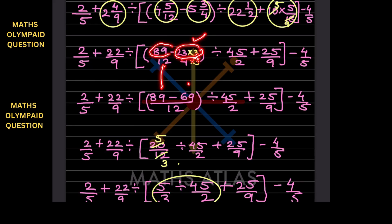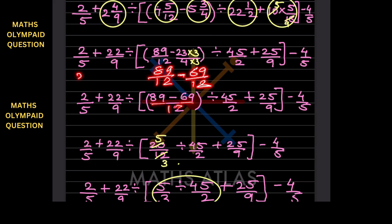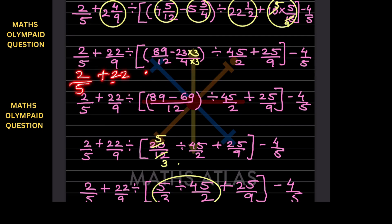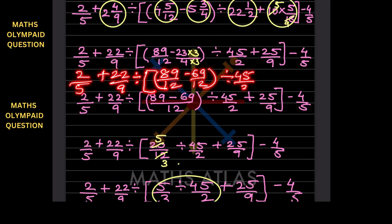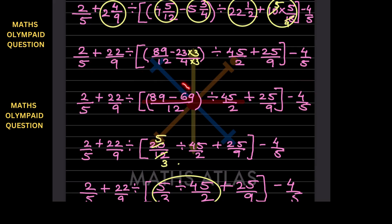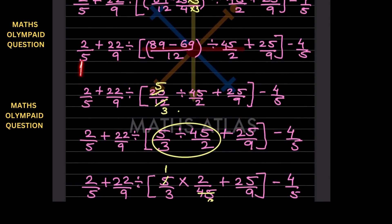When you multiply 23 by 3 you get 69, so the expression inside the round bracket becomes 89/12 minus 69/12. You can write this in one step. That gives us (89 minus 69) divided by 12. Everything outside the bracket stays as it is: plus 25/9 minus 4/5. Subtracting 69 from 89 gives 20, so the round bracket result is 20/12.